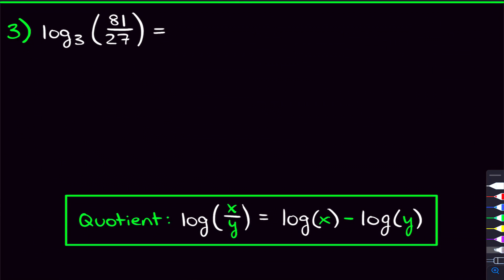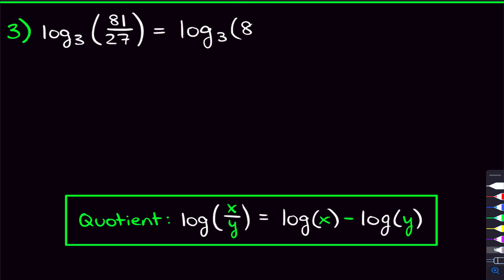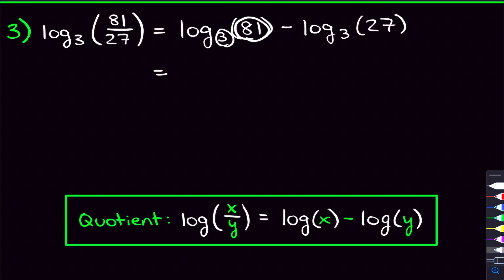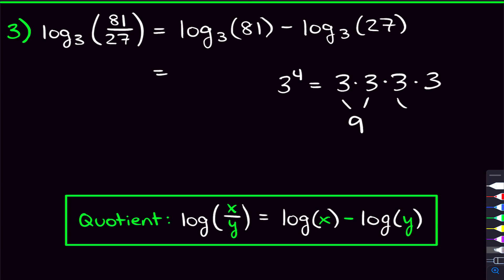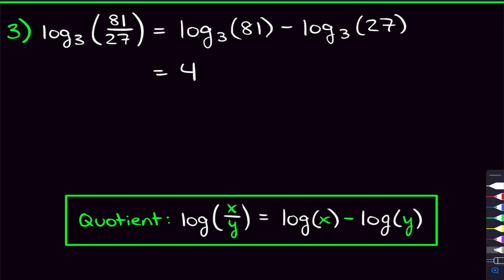Moving on to the third logarithm. Inside the logarithm, we have two things being divided, so we can use the quotient rule. We break this up into two separate logs, but now we have to make sure that we subtract them. So we have log base three of 81 minus log base three of 27. The first log is asking three to what power gives me 81 — that's three to the fourth power, because three times three is nine, and nine times nine is 81, so this is four. Then we have minus log base three of 27, which is three to the third power, so we write three. This log is equal to four minus three, which is one.